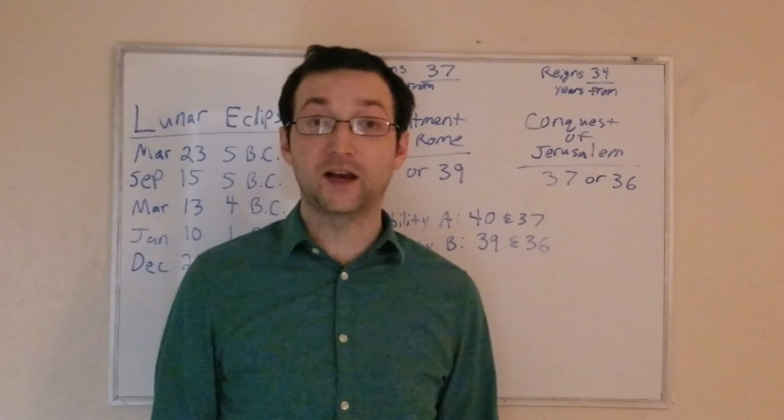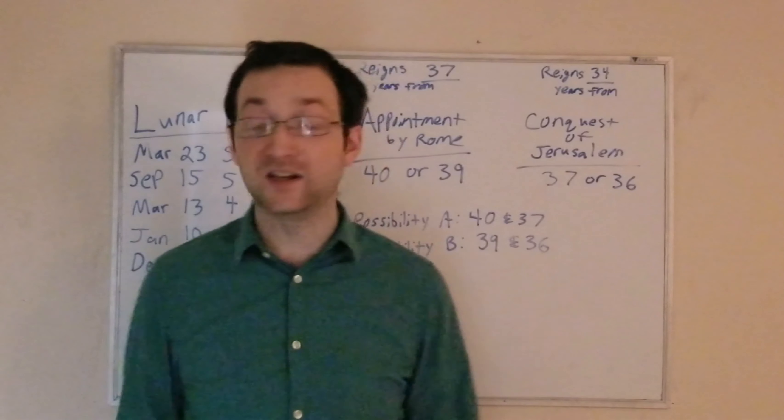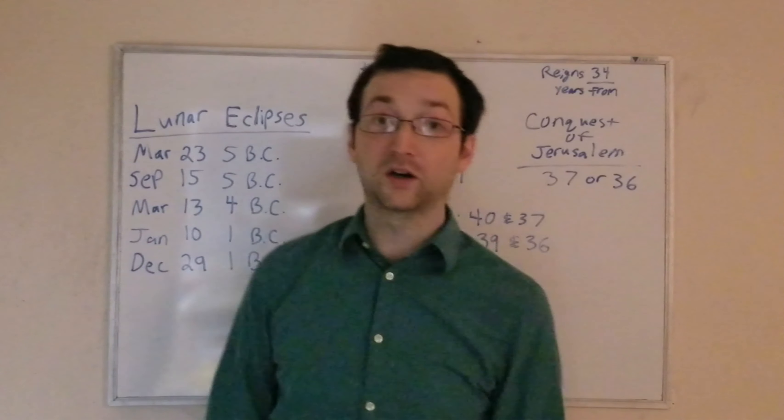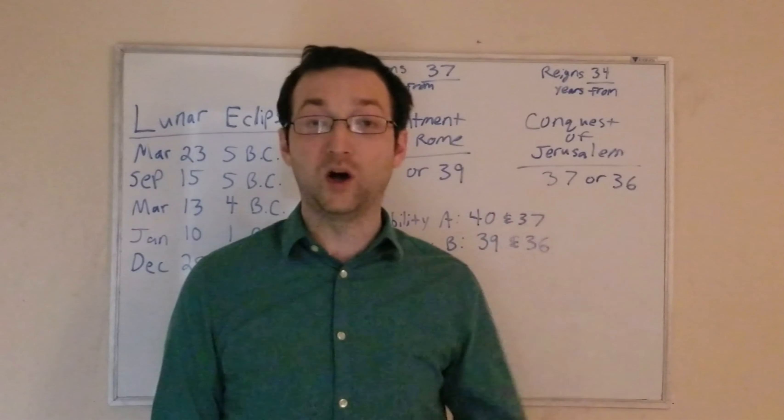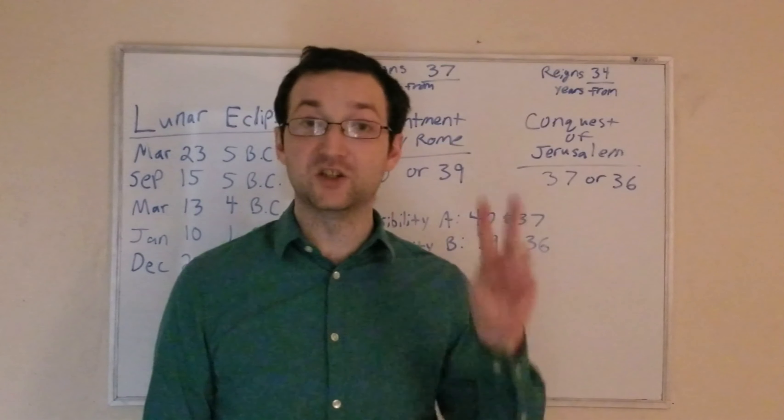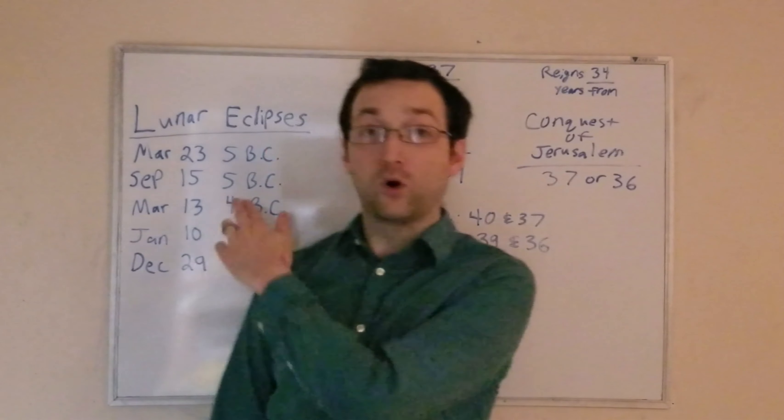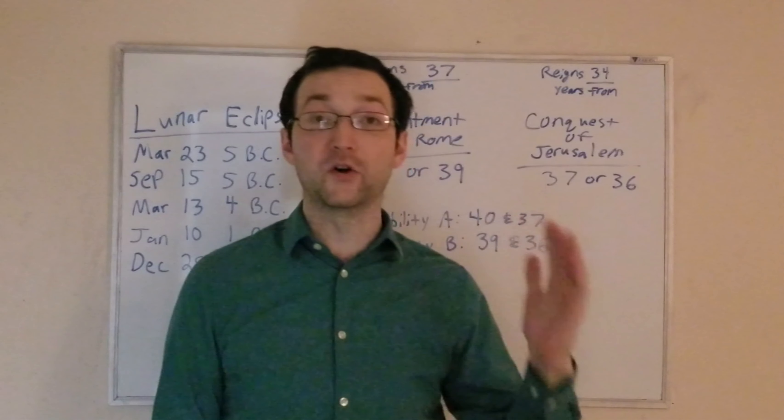Schur assumed inclusive counting. It was the only way to get 4 BC to work. Consider, if 40 BC is year one, then 39 BC is year two, 38 BC is year three, and so on. 4 BC would be year 37.